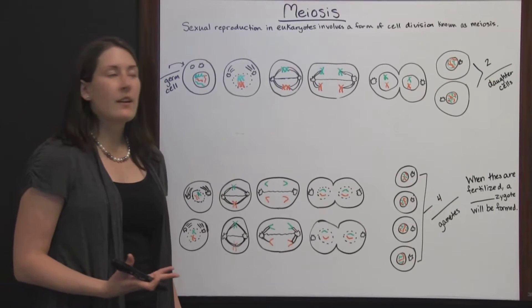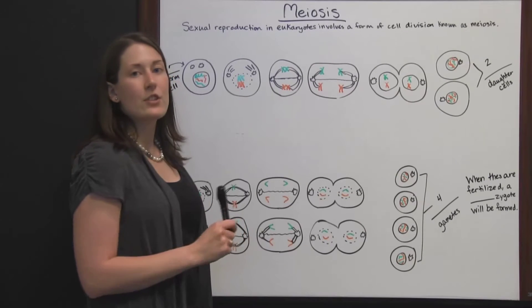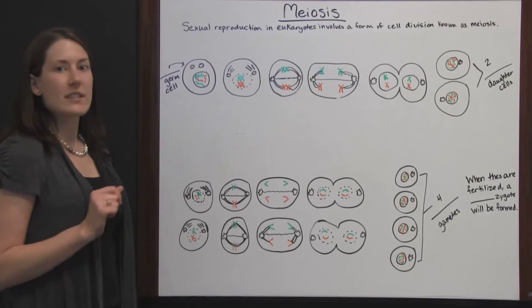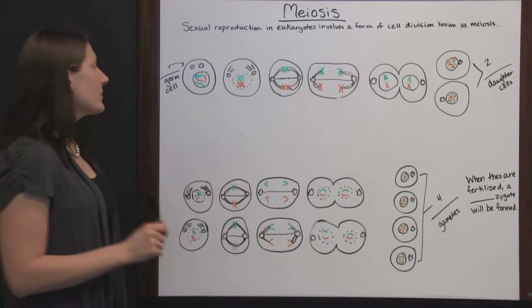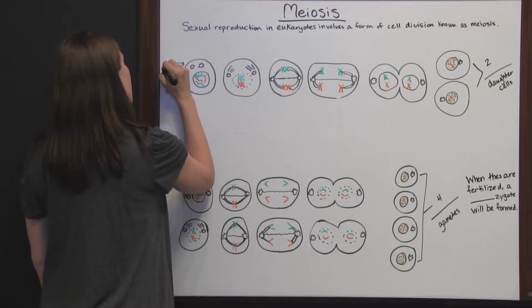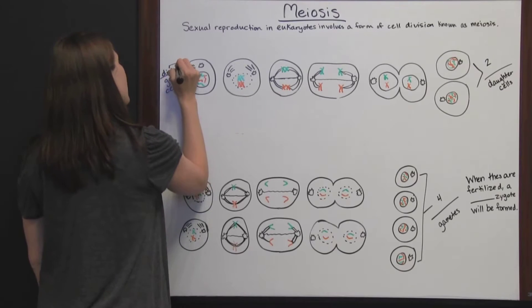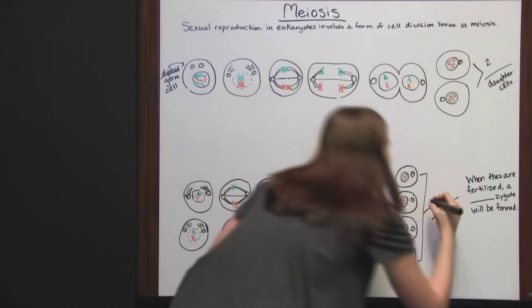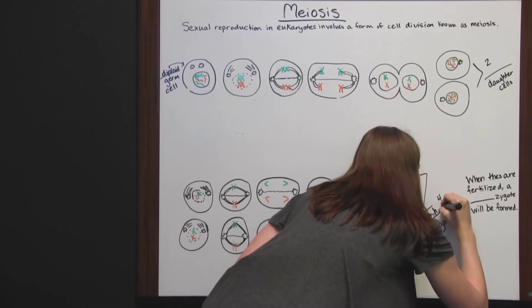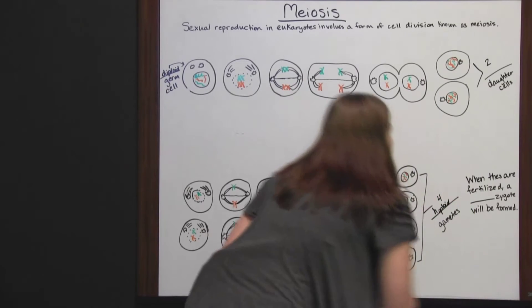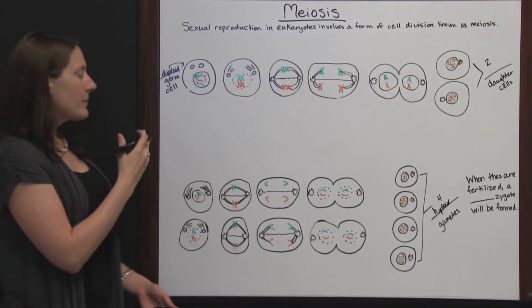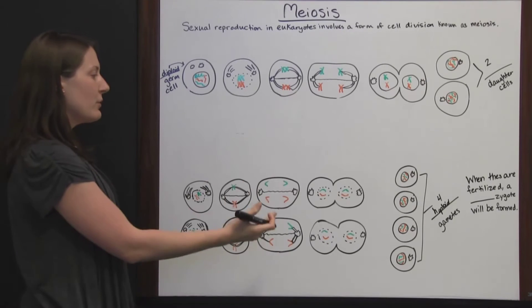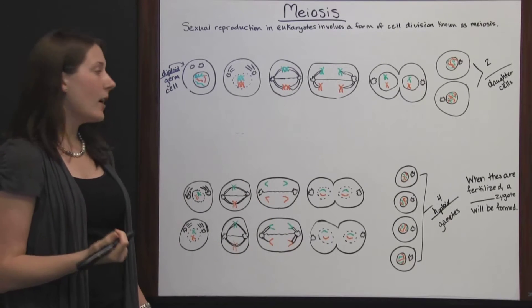Sexual reproduction in eukaryotes involves a form of cell division known as meiosis. It has several stages that allow one diploid germ cell to result in four haploid gametes. Diploid means having multiple copies of genetic information, while haploid means having one copy.